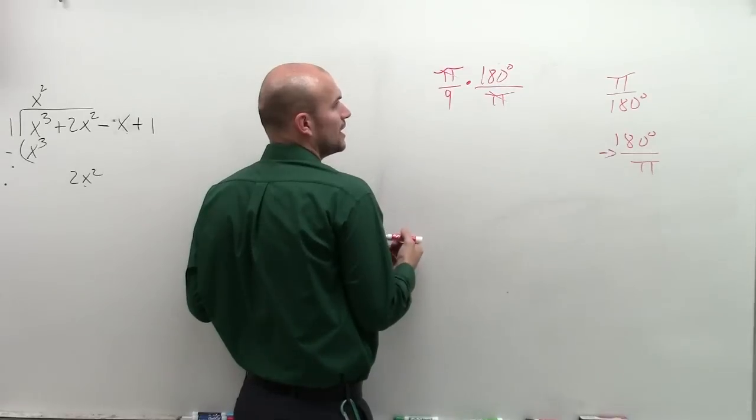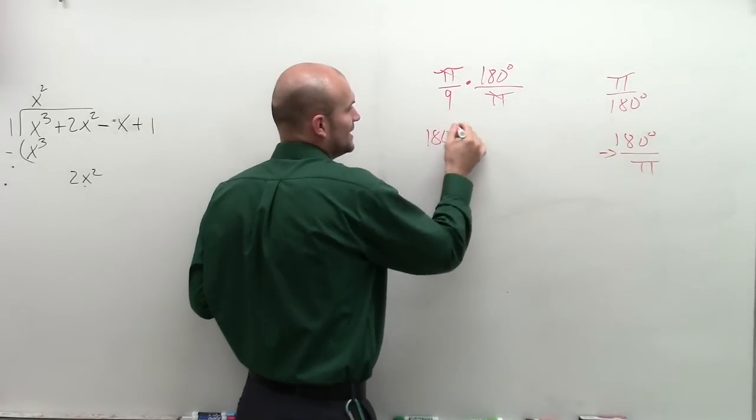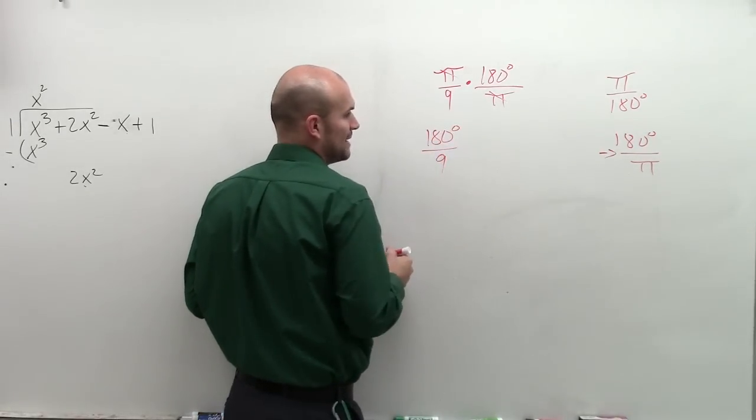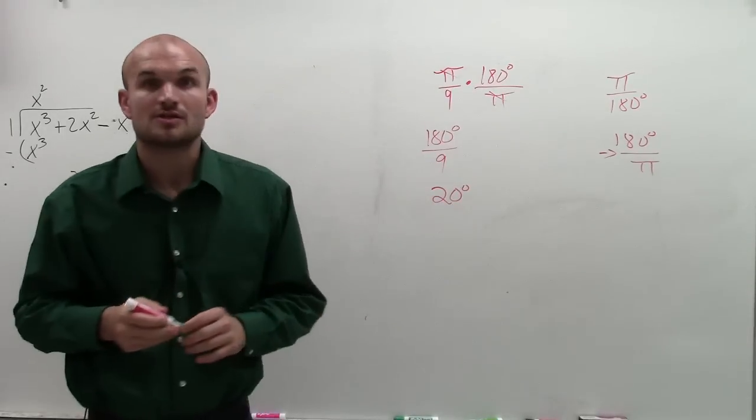So I'm going to go ahead and divide those out. π divided by π is 1. So I have 180 degrees now divided by 9. 180 degrees divided by 9 is now going to equal 20 degrees. So there you go,